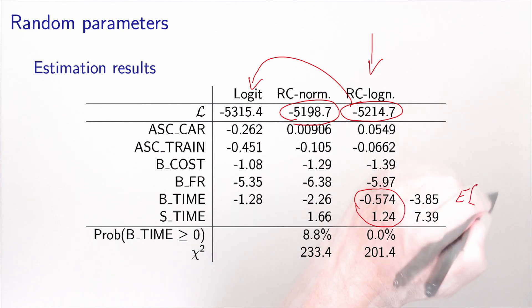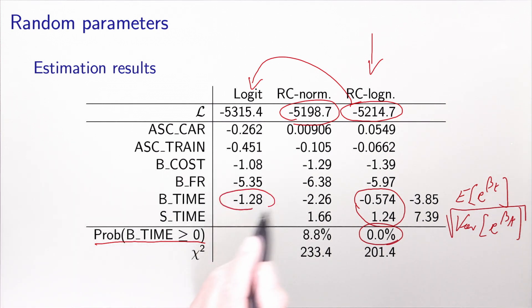As we just discussed, I cannot interpret them directly. I have to plug them into the equations to obtain the mean and the variance of the log-normal distribution. So this is the expectation of e to the beta_t, and this is the square root of the variance. And in this case, for this model, the probability that the beta_time is greater than zero is zero. By design, we have imposed it. Something that we can notice as well is that the mean value of beta is kind of going away from zero. So for the logit model, we had minus 1.28. Then for the normal distribution, we had minus 2.26. And now we have minus 3.85. Let's look at this on an illustration.